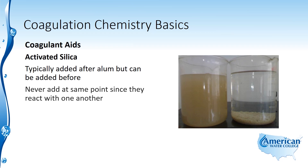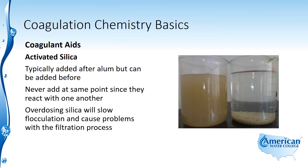You don't want to add alum and activated silica at the same point since they react with one another, which would be counterproductive. Typically you add the alum first, then the activated silica once the alum has had a chance to perform its coagulation function. If you overdose silica, it will slow the flocculation process and cause problems with filtration — too much of a good thing can be a bad thing.